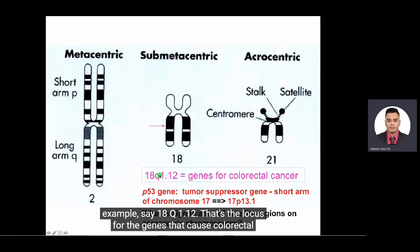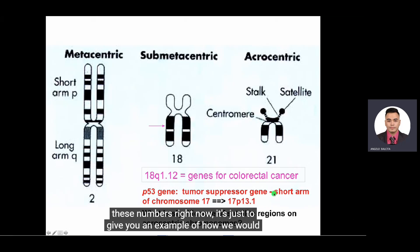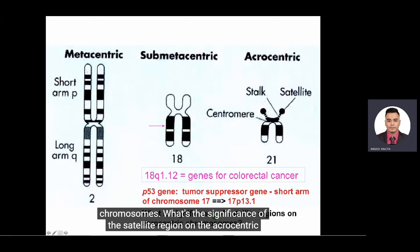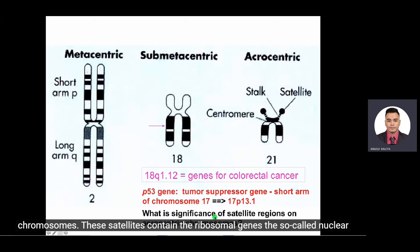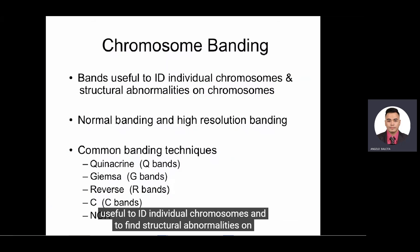Oftentimes you'll see a chromosomal locus designated — for example, 18q1.12 is the locus for genes that cause colorectal cancer. The p53 tumor suppressor gene is on the short arm of chromosome 17, designated as 17p13.1. These are just examples of how we designate loci on chromosomes. Regarding acrocentric chromosomes, the satellite regions contain the ribosomal genes — the so-called nuclear organizer regions.